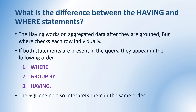What is the difference between HAVING and WHERE statements? Basically these two statements we use for filtering purposes only. But HAVING works on aggregated data after they are grouped — so once we complete grouping of data using GROUP BY clause, after that it checks the condition mentioned in HAVING and filters out the rows. But WHERE checks each and every row individually, so before grouping the WHERE condition executes. If both statements are present in the query, we write WHERE first, then GROUP BY, then HAVING, and SQL engine interprets them in the same order.